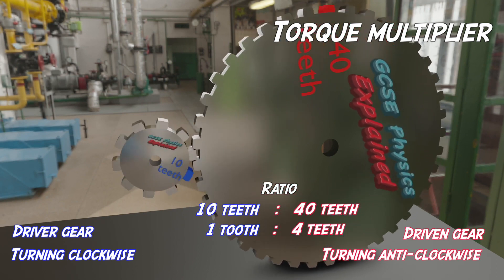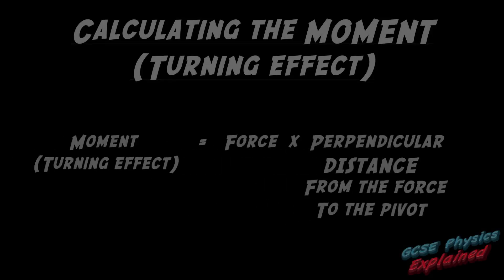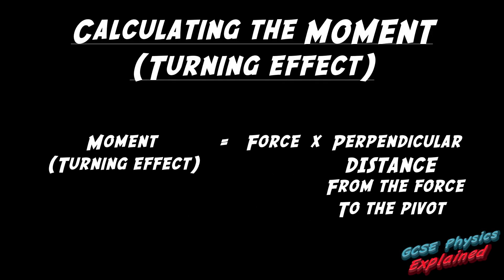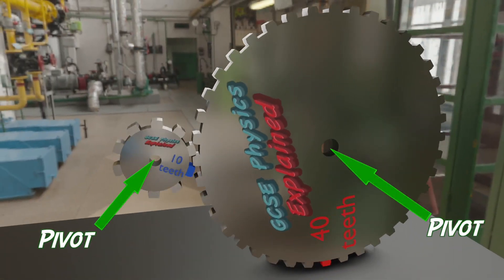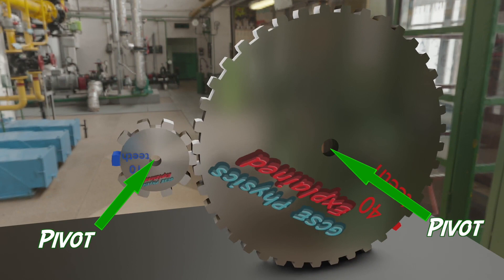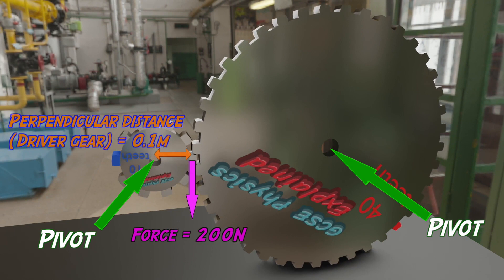It's important to understand that a moment or turning effect does not just depend on a force. It also depends on the perpendicular distance that the force is being applied from the pivot. The pivot is the point around which the gear rotates — it's always in the middle of the gear. The moment equals the force times by the perpendicular distance of the force from the pivot.